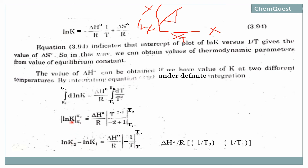Applying the upper limit first and then the lower limit with a negative sign: on the left side we get ln K2 − ln K1. On the right side, since the integrand is −1/T, applying the upper limit gives −1/T2, and applying the lower limit with a negative sign gives +1/T1. The constant ΔH°/R remains outside.